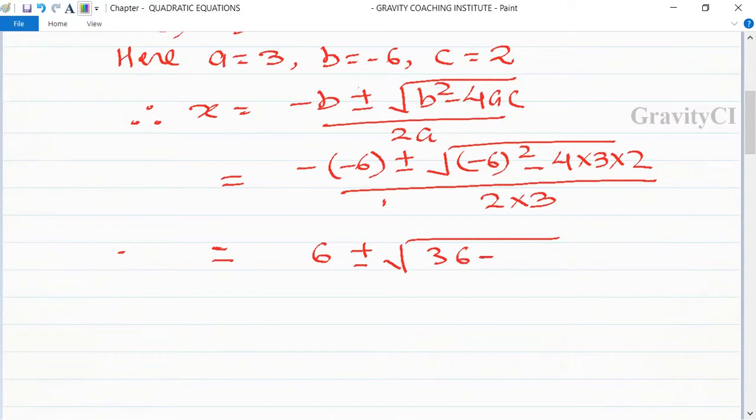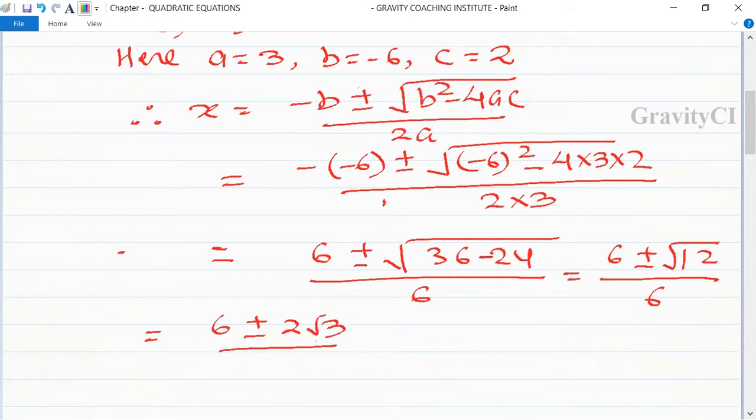So this is equal to 6 plus minus root under 12 upon 6, which equals 6 plus minus 2 root 3 upon 6.